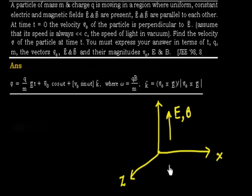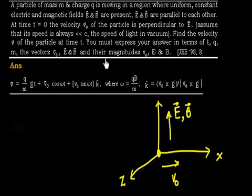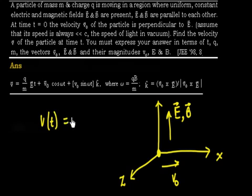At t = 0, the particle is at the origin and has been given a velocity v0 perpendicular to the electric field — so E is in the y-direction and velocity is in the x-direction. We assume v is much less than c, so we are not entering the realm of relativity. We need to find the velocity of the particle as a function of time t, expressing the answer in terms of v0, E, and B.